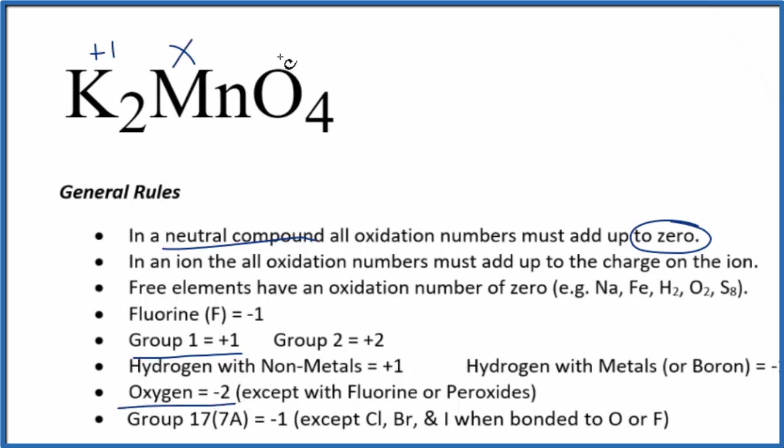Oxygen is minus two, with a few minor exceptions. So we have minus two as our oxidation number on each oxygen atom.